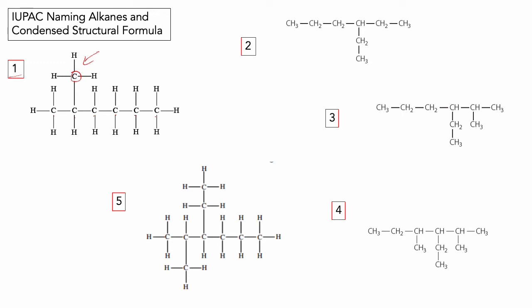Now we need to give that methyl group an address — specify which carbon it's attached to. To give the methyl group the lowest possible number, I number from the left: carbon one, two, three, four, five, six. The methyl group is on the second carbon, and the chain is six carbons long — hexane. So we write this as 2-methylhexane.